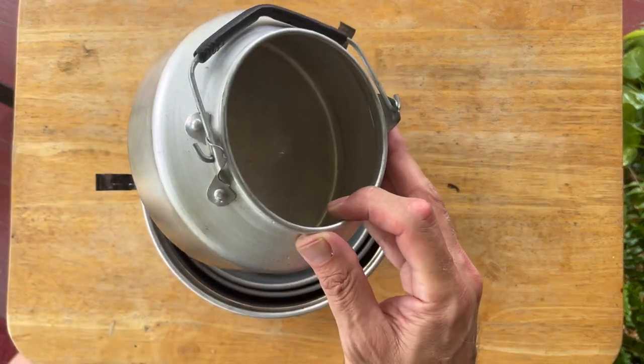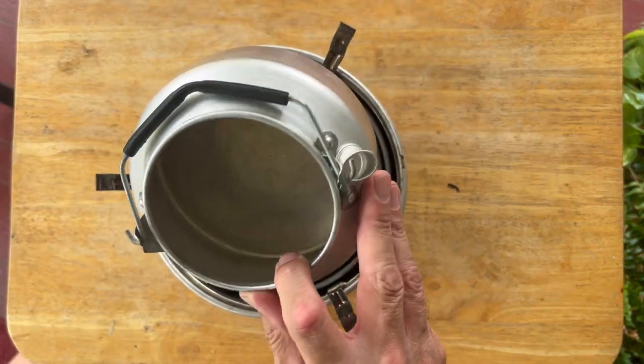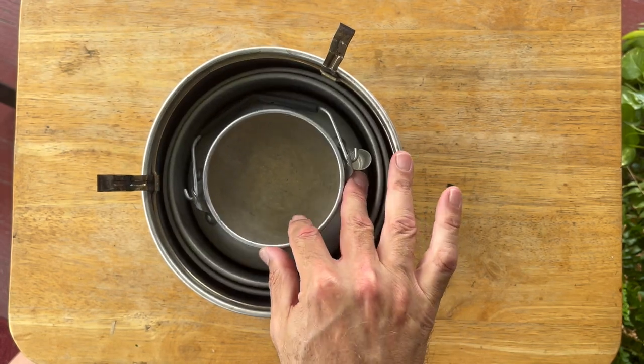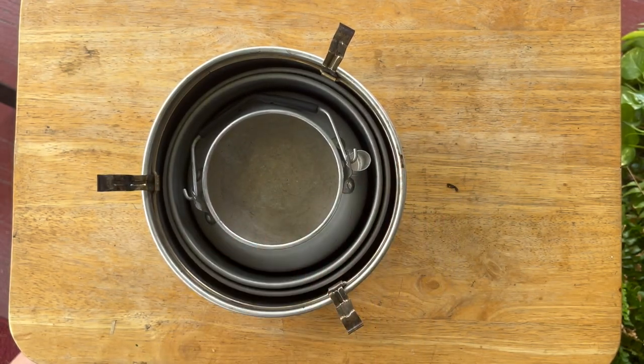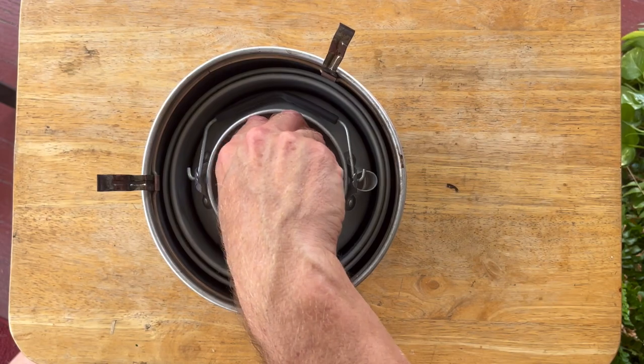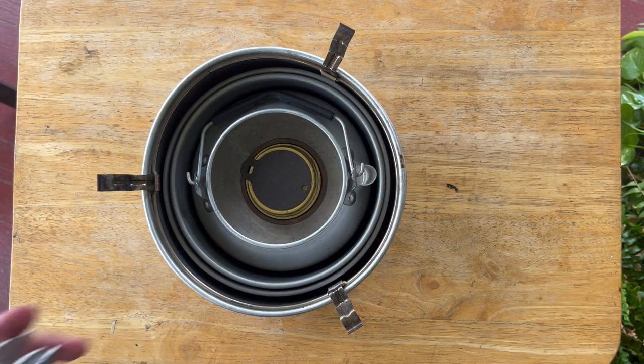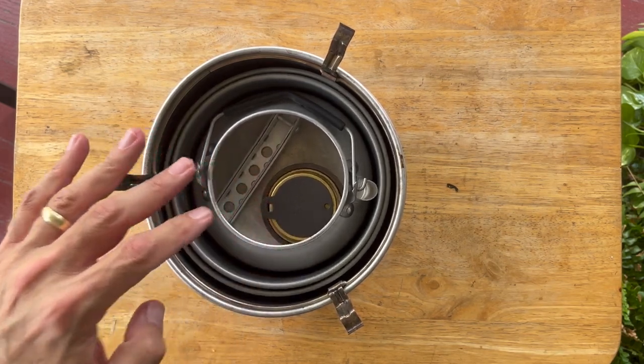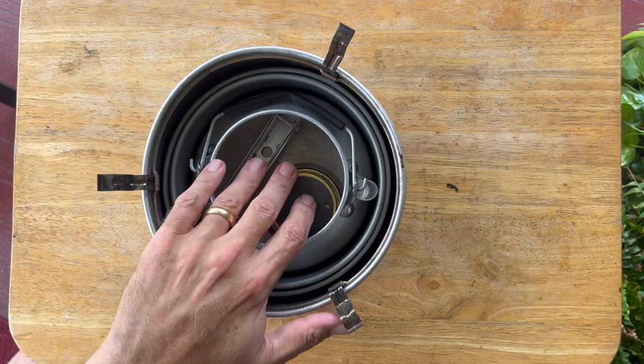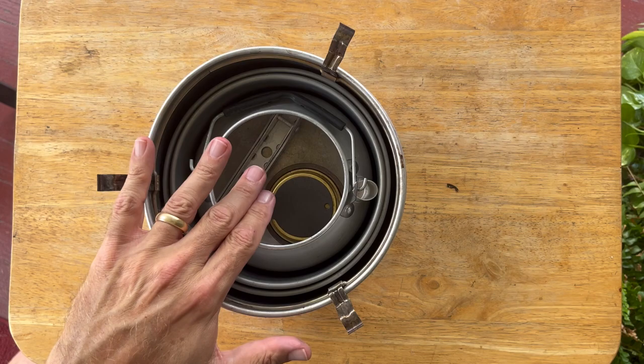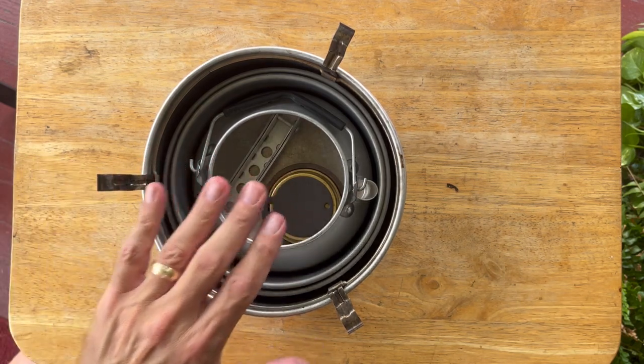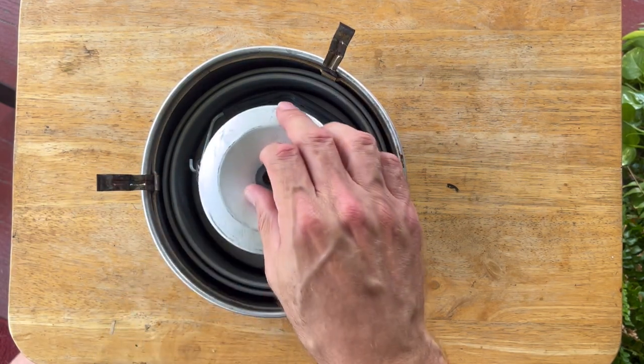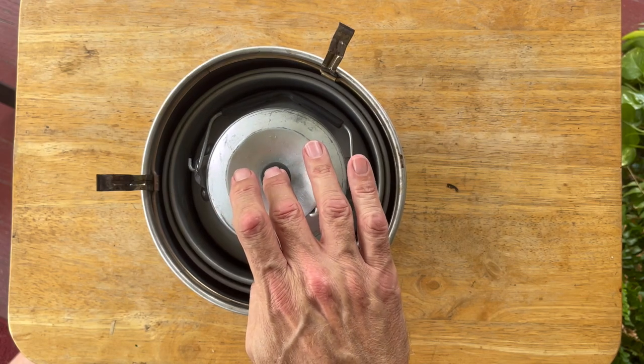So I've got my 0.8 or 0.9 liter kettle. I always keep the burner in the kettle and one of the pot grabbers. Since it's pretty important for this particular set, I always keep an extra in there. Usually I put a lighter in there as well.